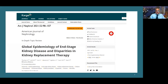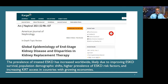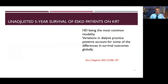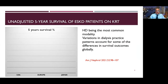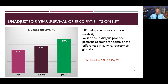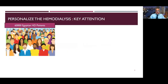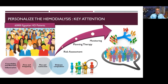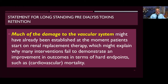The global epidemiology of end-stage kidney disease shows that the prevalence of treated ESKD has grown worldwide due to increasing incidence. However, the unadjusted five-year survival of ESKD patients is still limited — 41 percent to 48 percent globally, and up to 60 percent in Japan. We need more personalization of hemodialysis, better patient risk assessment, planning, and therapy monitoring.